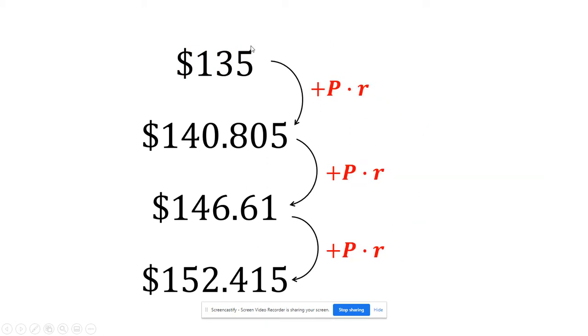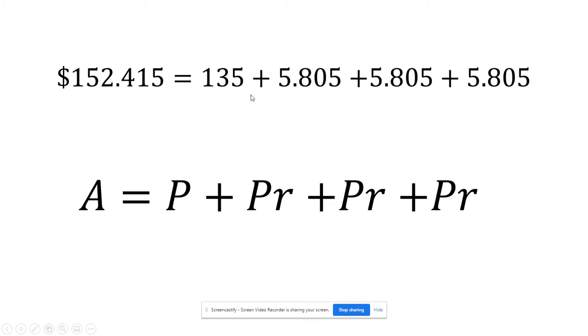So let's think of it as our principal, $135, plus P times R over and over again for each year that we want to calculate our balance for. So our $135 to begin with, plus P times R three times. So here's kind of a generic formula for what we did.